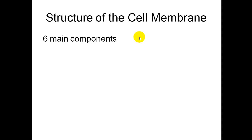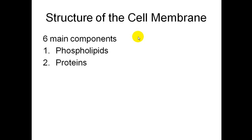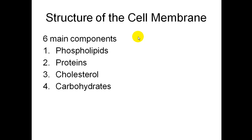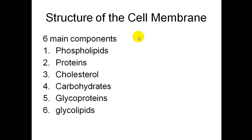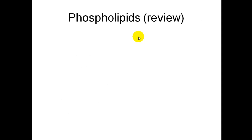There are six main components of the cell membrane. Number one is phospholipids. Number two, proteins. Number three, cholesterol. Four, carbohydrates. Five, glycoproteins. And six, glycolipids. We're going to go through each one of those.